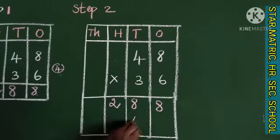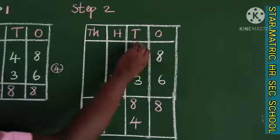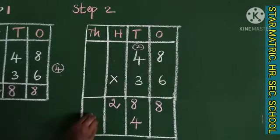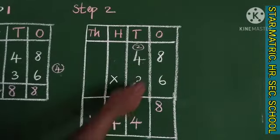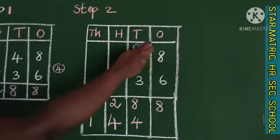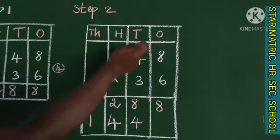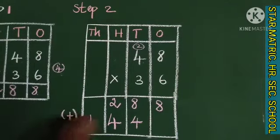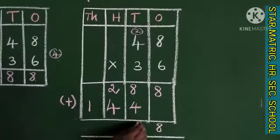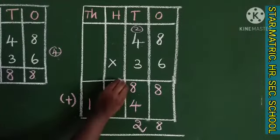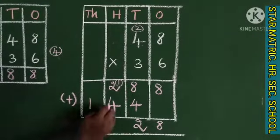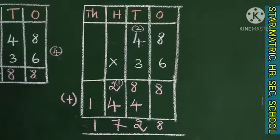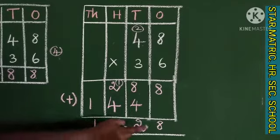3 into 8 is 24, balance 2. And 3 fours are 12, plus 2 is 14. Then 6 into 8 is 48, balance 2. 6 into 4 is 24. Adding everything: 8, then 4 plus 8 is 12 — balance 1. 4 plus 2 is 6, plus 1 is 7. Here 1. So the answer is 1728.